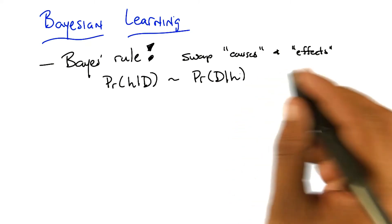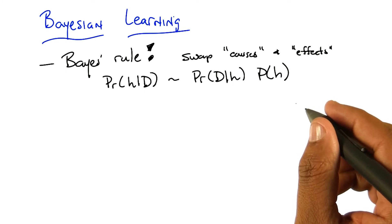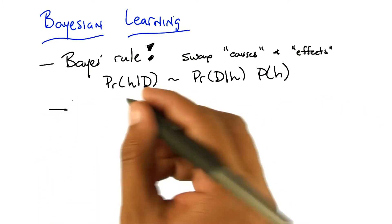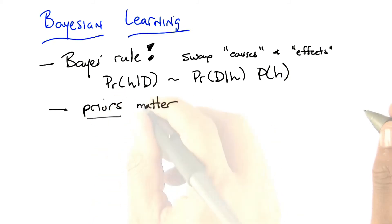And what makes it, of course, Bayes' rule in general, is that you weight that by the prior probability over the hypothesis. Which, in fact, is one of the important things that we learned, which is that priors matter. So, anything else we learned?